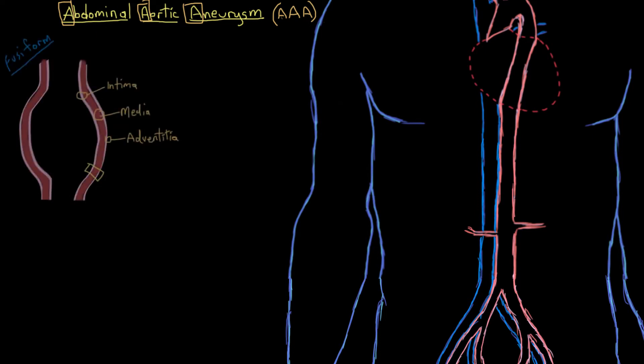An aneurysm in your abdominal aorta can look something like this. So this here is a bit of your aorta. You can see that it's symmetrically ballooned out on both sides, and we call an aneurysm that's ballooned out symmetrically a fusiform aneurysm. Notice that all of the layers of the wall of the aorta are involved in this ballooning out.